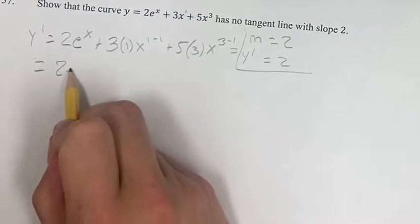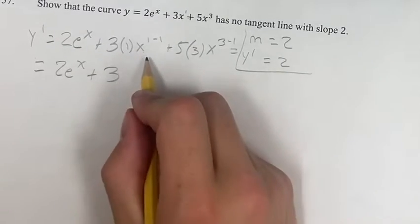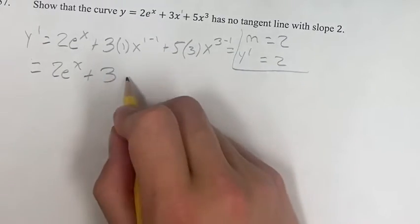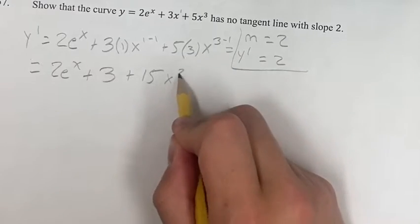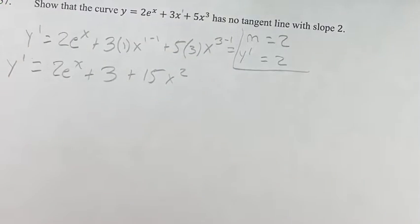Simplifying this, we get 2e to the x plus 3 times 1 is 3, x to the 1 minus 1 is x to the 0, which is 1, so this is just 3, plus 15 times x to the 3 minus 1 is x squared. So this is our derivative, and we are asked when is this equal to 2?